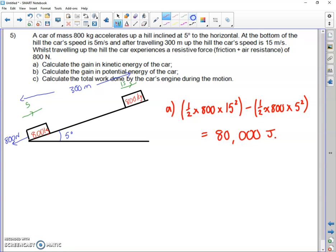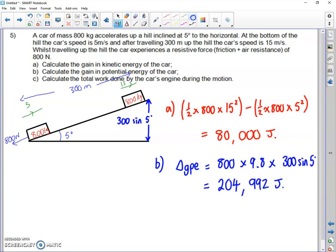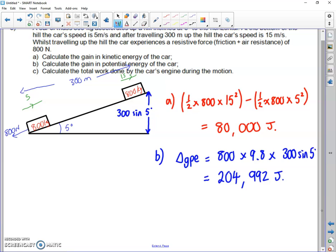Part b asks us to work out the gain in gravitational potential energy, which is mgh. To do that, we're going to have to work out h, the opposite side of our right angle triangle. We know the hypotenuse is 300, so the height gained is 300 sin 5, which is 26.147 meters. So when we do our mgh, our change in GPE is equal to 800 times 9.8 times 300 sin 5, or 26.147 meters. This car gained 204,992 joules.